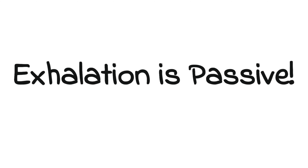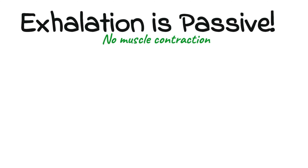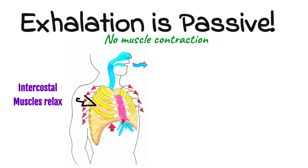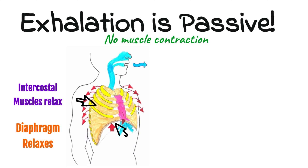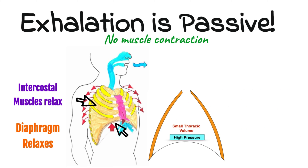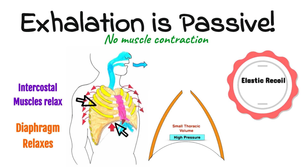Exhalation is a passive process. Why? Because there is no muscle contraction — all of those muscles are now relaxing. The intercostal muscles relax, the diaphragm relaxes and goes back to being that dome shape. Thoracic volume will decrease and the pressure will increase, and the elastic recoil of the lungs helps them deflate. Imagine stretching an elastic band and letting it go.